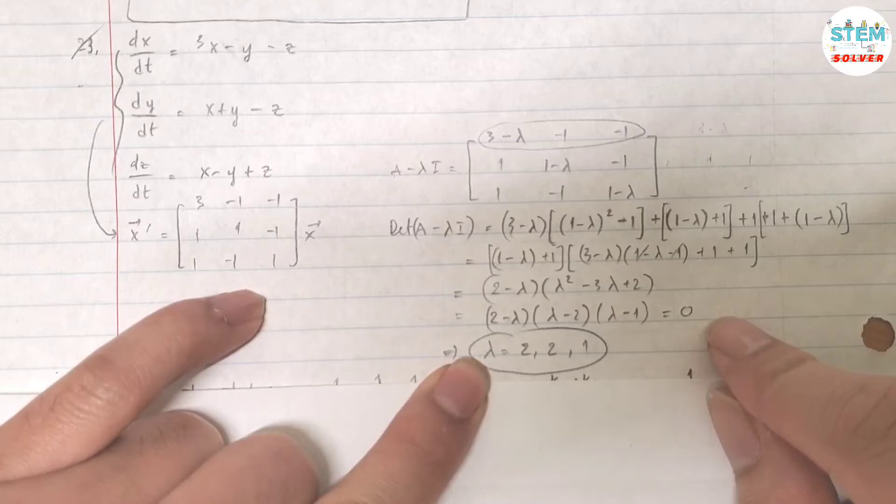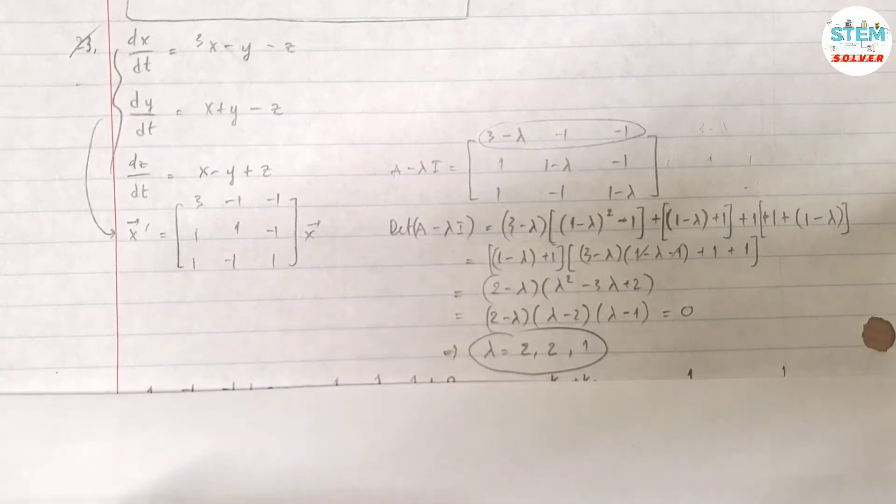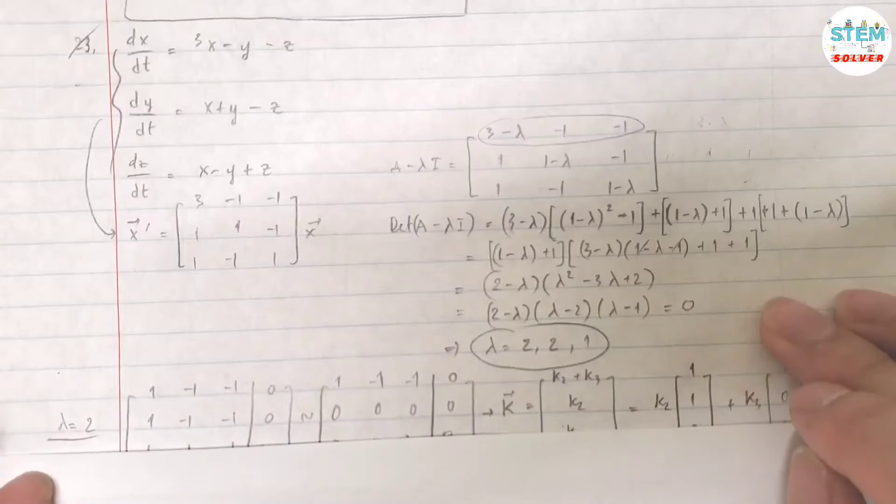So you have a 3 by 3 matrix. That means that you will have 3 eigenvalues. Now let's take a look at the case when you have lambda equals 2.